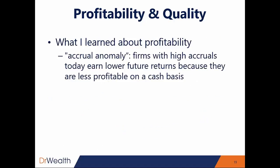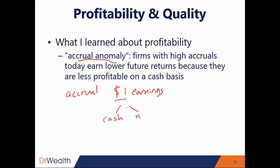What I learned about profitability is about this accrual anomaly. The accounting system is accrual-based — let's say you have $1 of earnings per share. That $1 may not be all cash. So there is a cash component and then there's a non-cash component. The non-cash component is known as the accrual.